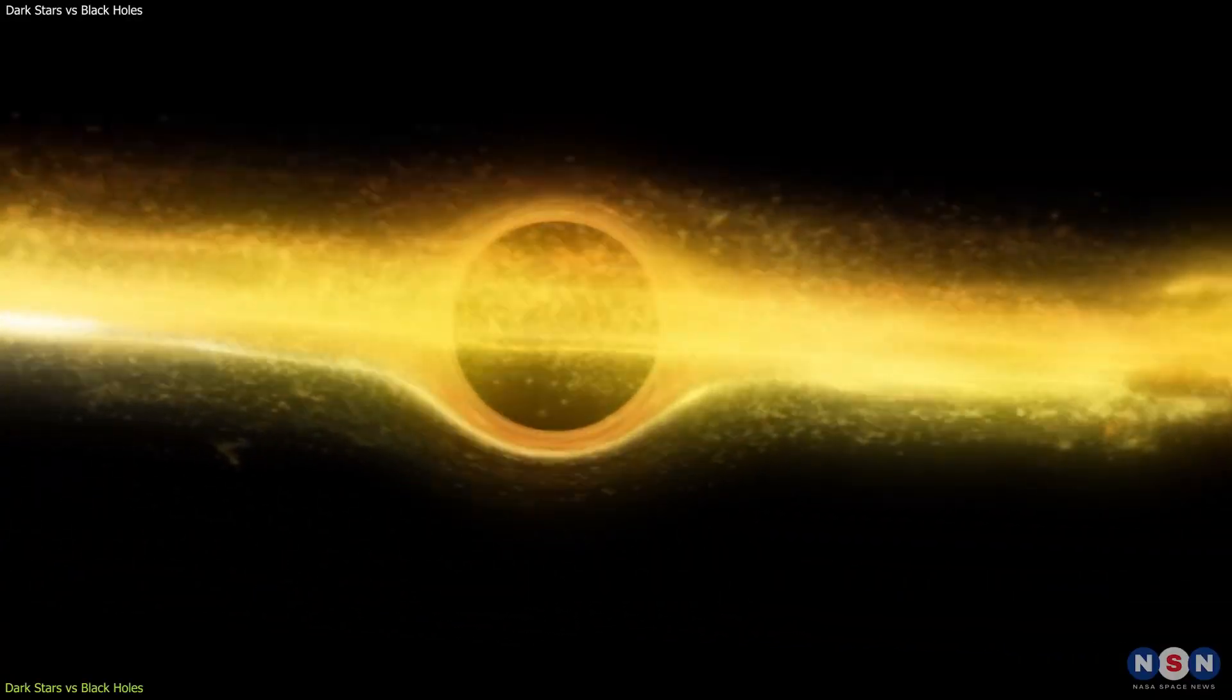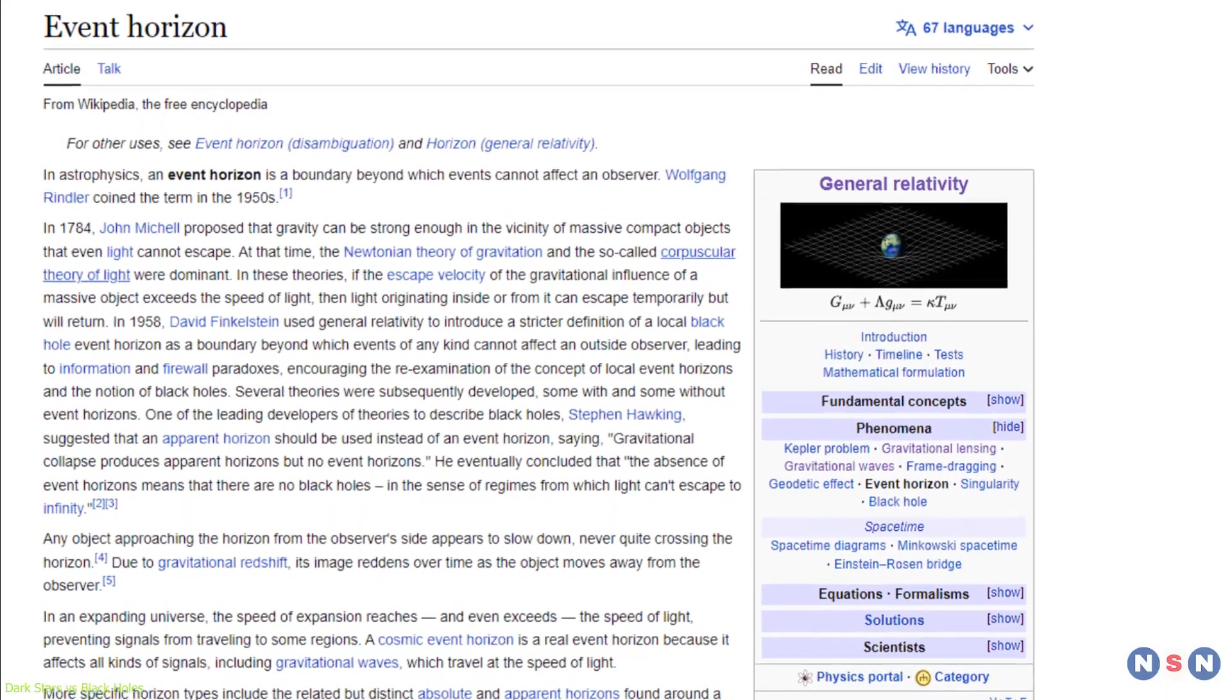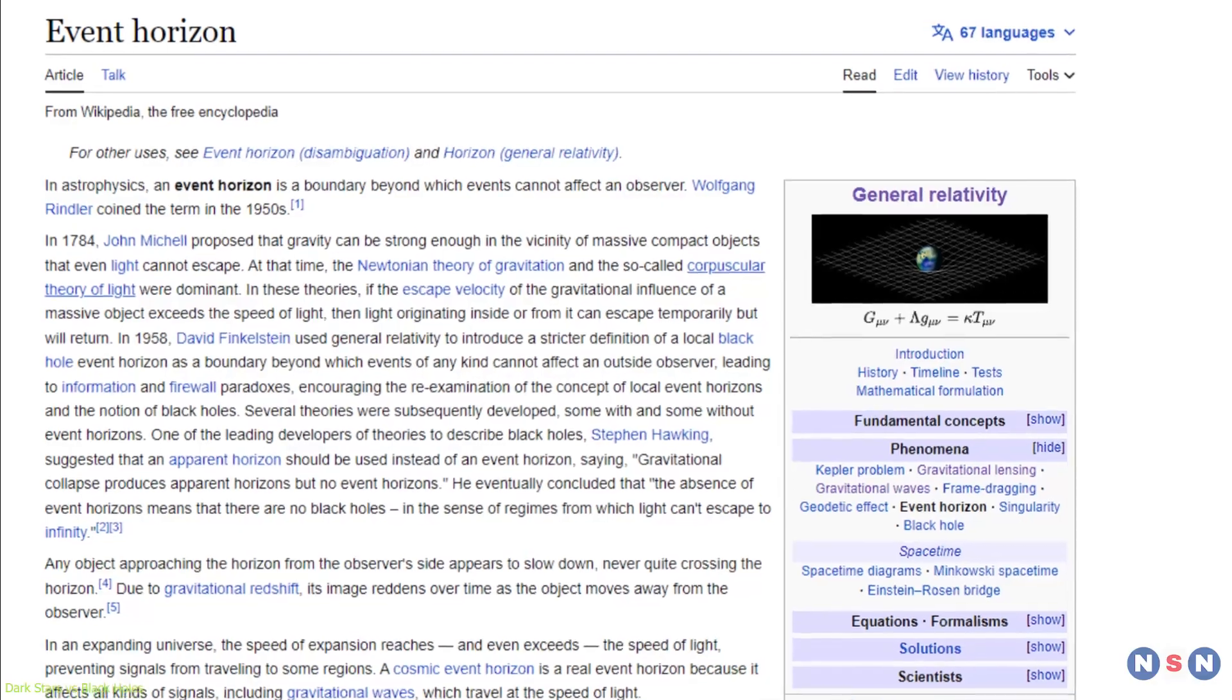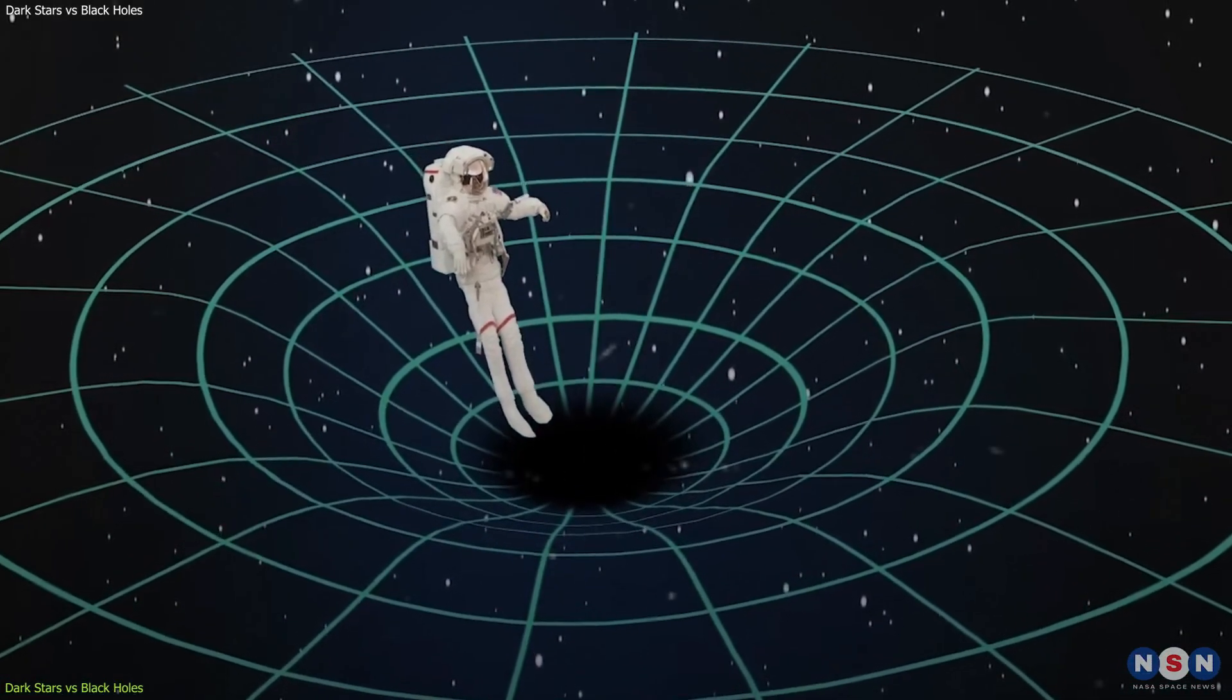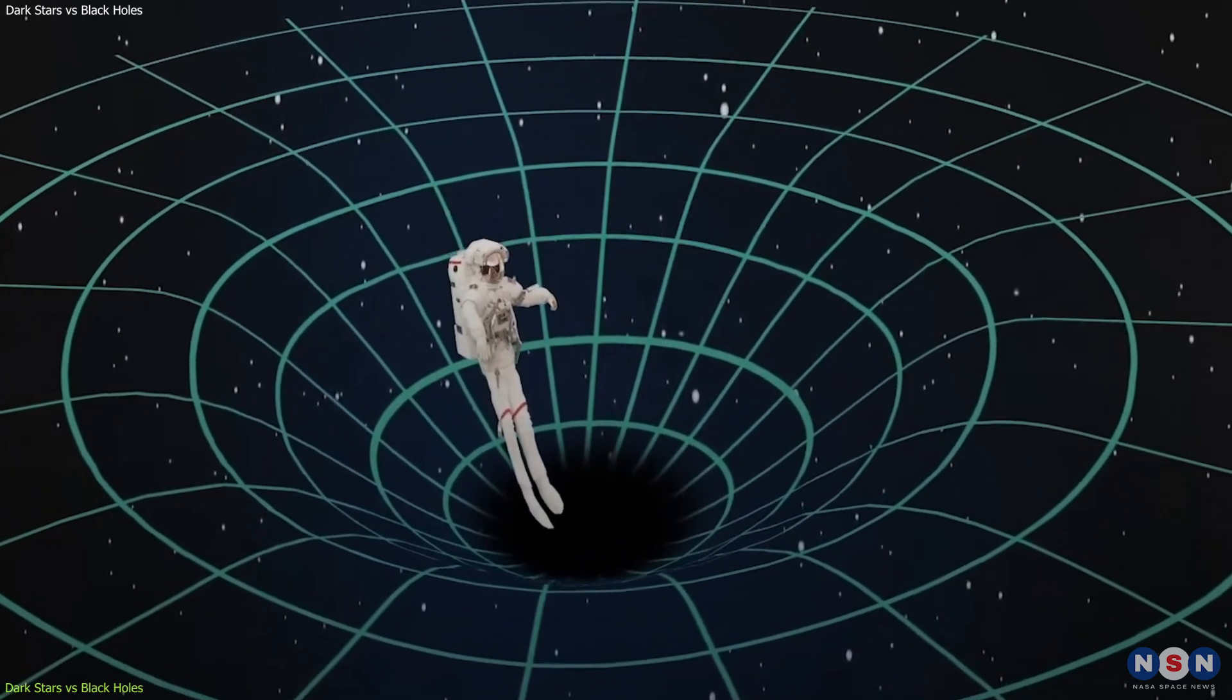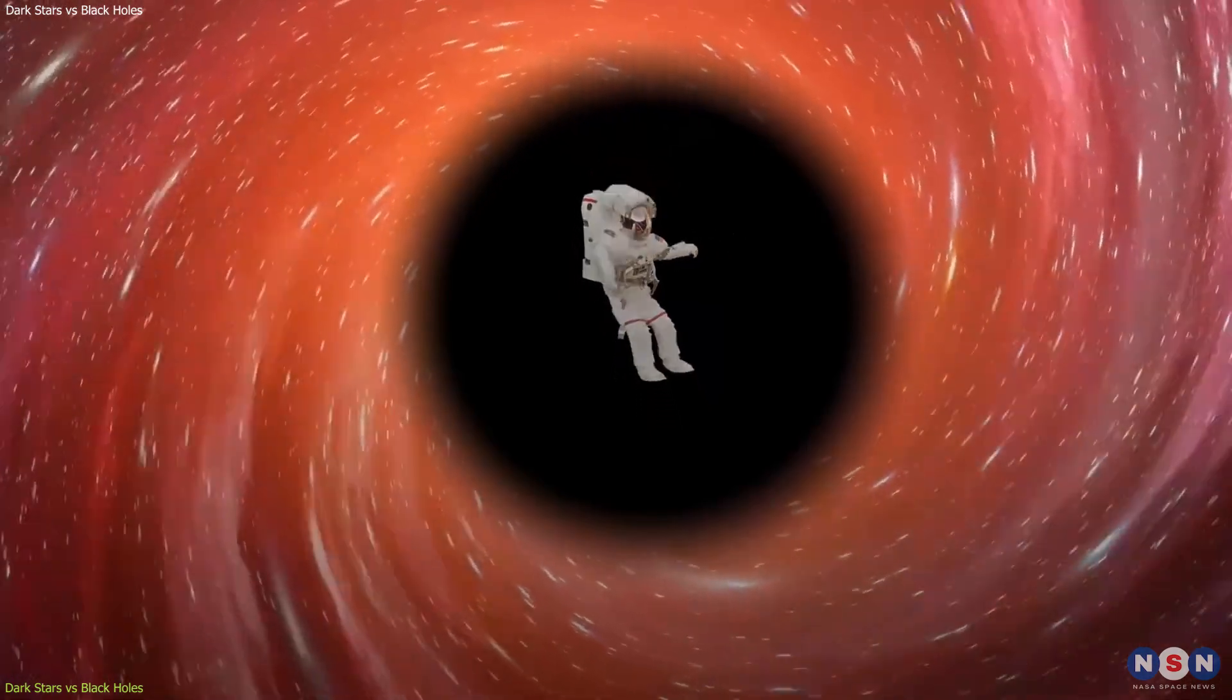Both dark stars and black holes are also surrounded by an event horizon, which is the point of no return for anything that falls into them. Once you cross the event horizon, you can never come back, no matter how fast you go. The event horizon is like a one-way door that leads to a place of no return.